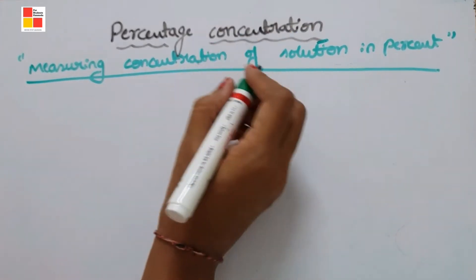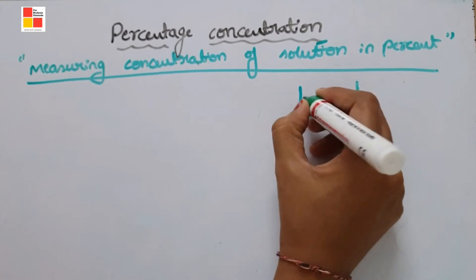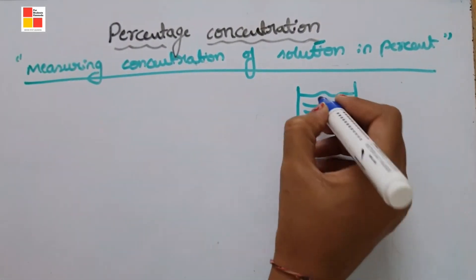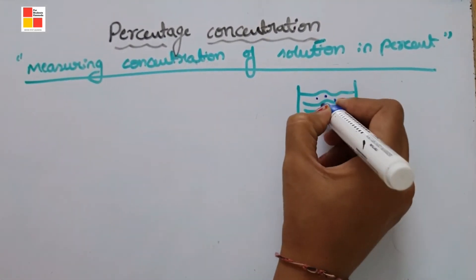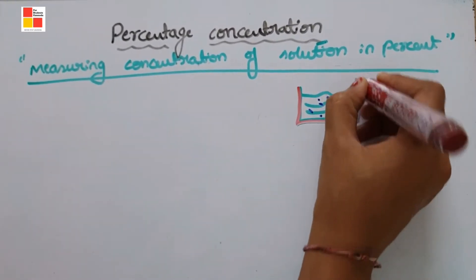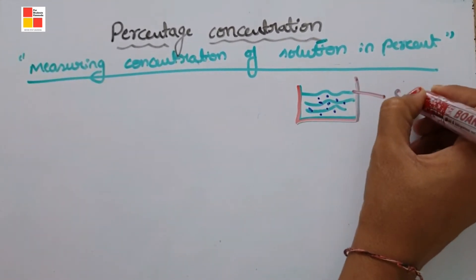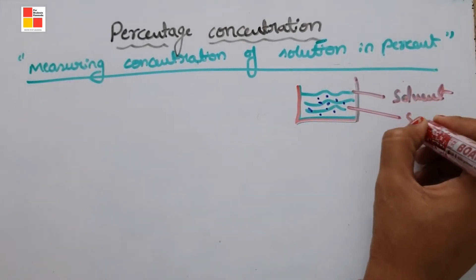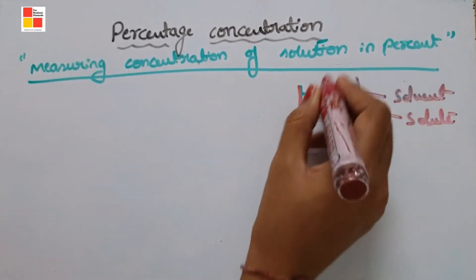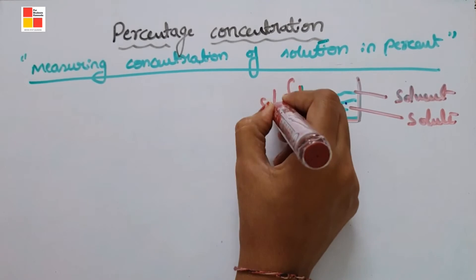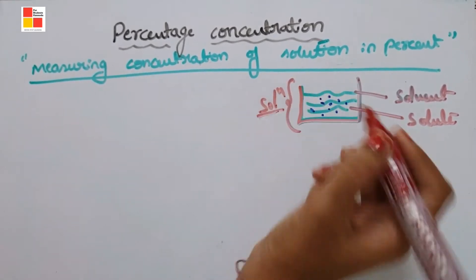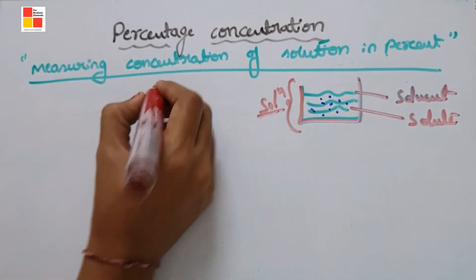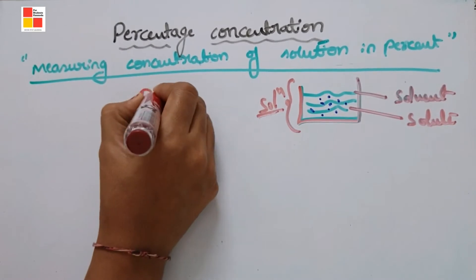For example, one solution — in the solution there is a solvent plus a solute. Green is the solvent, blue dots are the solute, and the total is the solution. The concentration will help you understand percentage concentration.